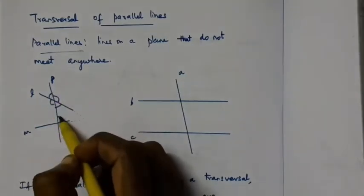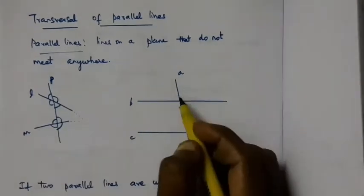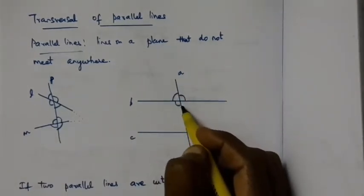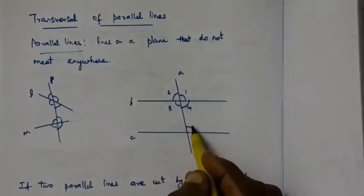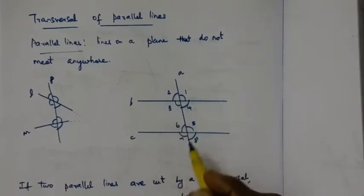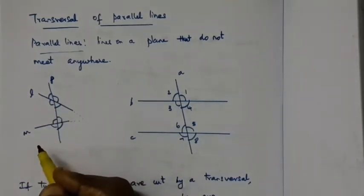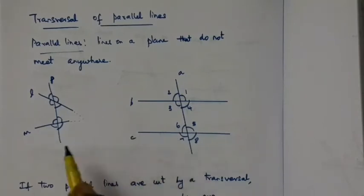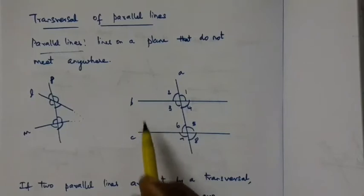There are four angles formed at each intersection. I will name them 1, 2, 3, 4 at the top intersection and 5, 6, 7, 8 at the bottom intersection. The difference between the two figures is that here the lines are not parallel, while in the other figure lines B and C are parallel. Now we are going to see what happens when these lines are parallel.